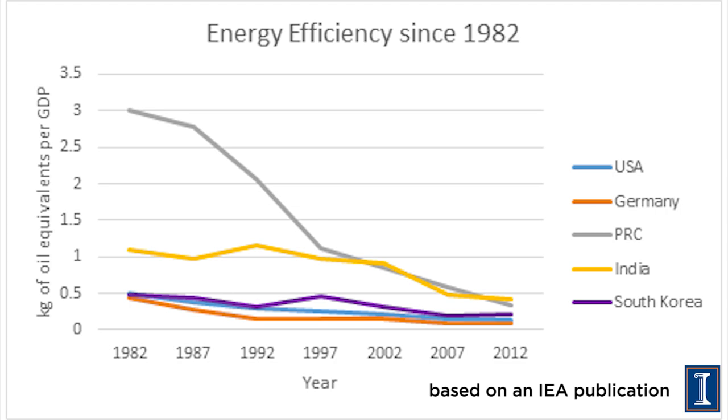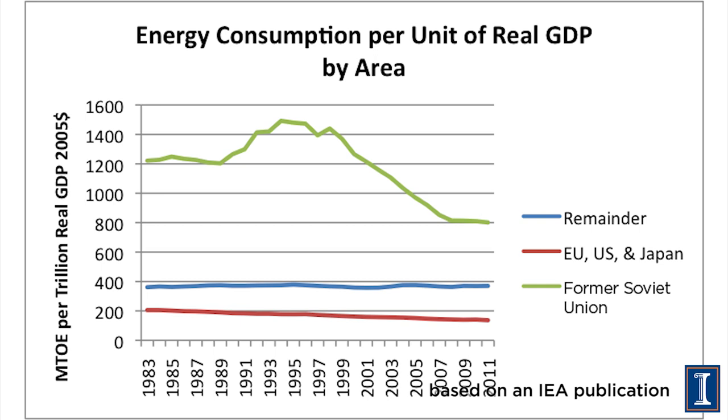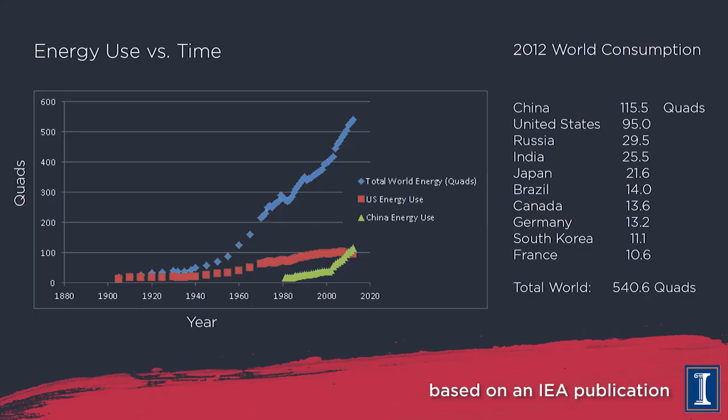Countries including Russia and others formerly behind the Iron Curtain had state-run enterprises not run for profit motive, which could afford to be extreme energy wasters. While that's no longer true, the legacy of that is still represented in their infrastructure. Russia is also even colder on average than Canada and even less densely populated — both of those factors contribute to high energy use per unit of goods and services produced.